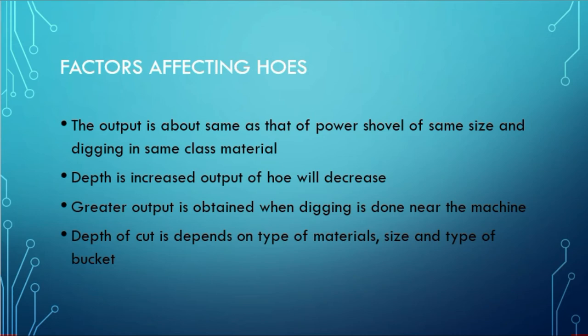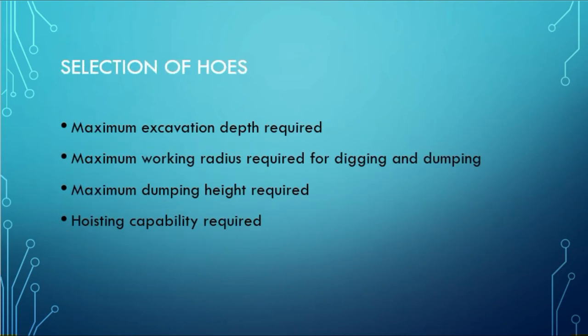The back hoe works in a group-shovel configuration. As depth increases, output will decrease. Greater output is obtained when digging is done in the middle of the excavation area, with mere stability. If the machine is near to the working face, it will be more comfortable. Selection factors include: maximum excavation type required, maximum working radius for digging and dumping, maximum running space required, and hoisting capacity required.